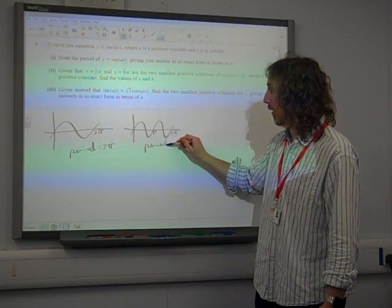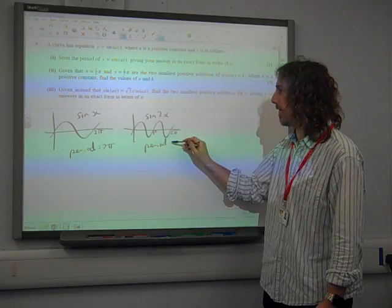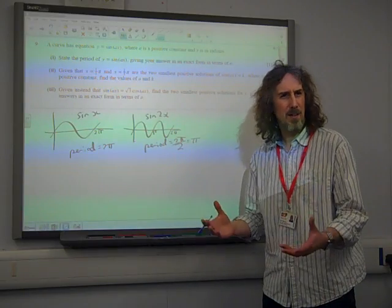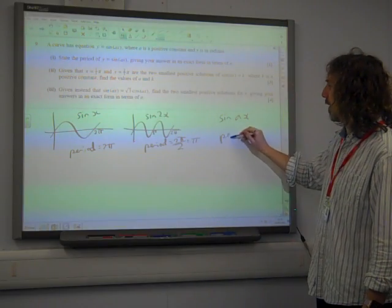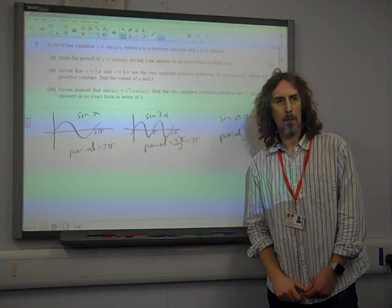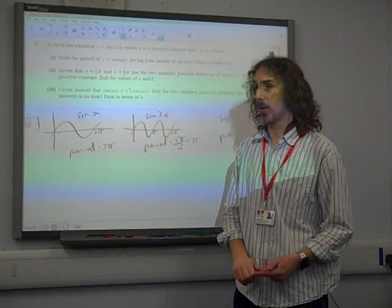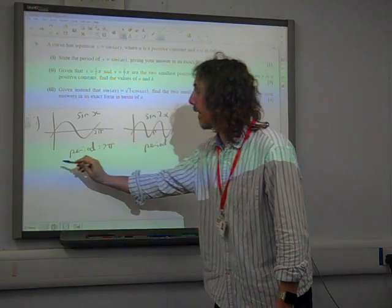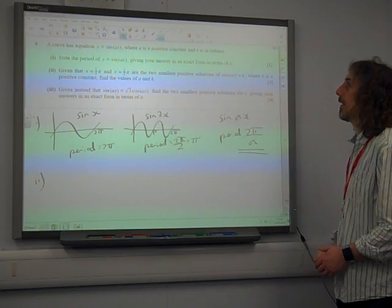So the period of that one, if that's sine 2x, I maybe wouldn't have written all of this in the exam, that's sine x, that's sine 2x, and the period is 2π over 2, which means that has a period of π. So the period of sine ax, that is 2π over a, and that would be the period of the graph. I'm not sure how much we talked about the period of the graph. It's not something, if you look through the past papers, that has come up very often. But there we are. So a little graph was helpful to start with. 2π over a is the answer for that one.